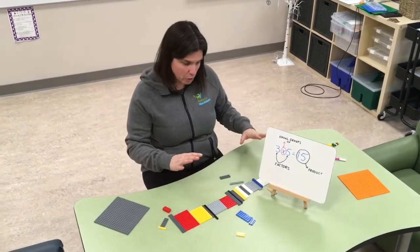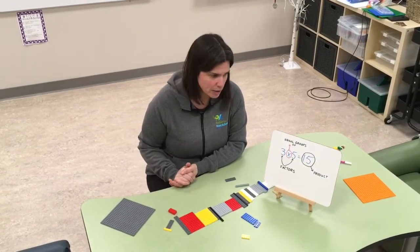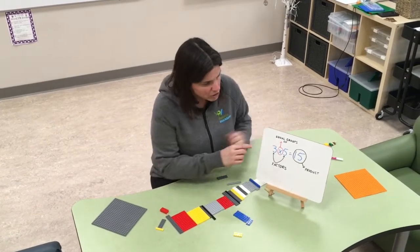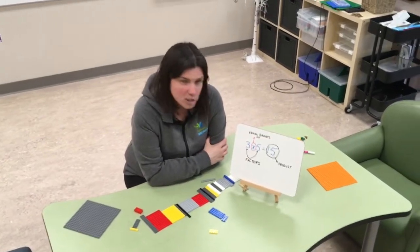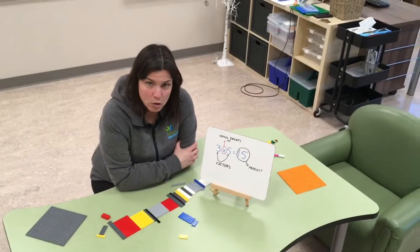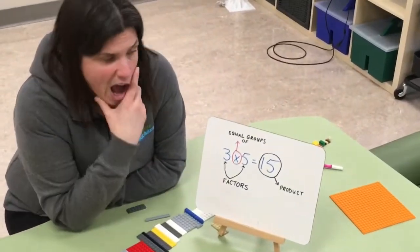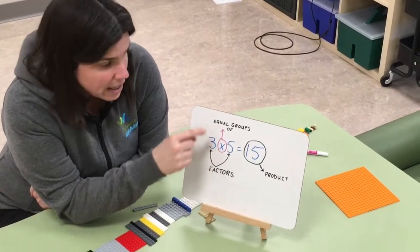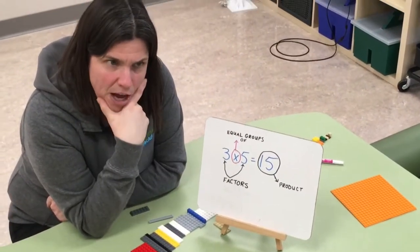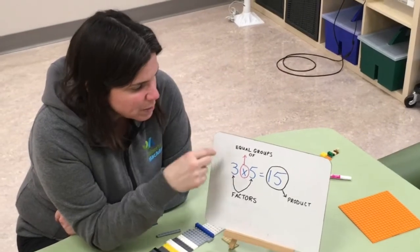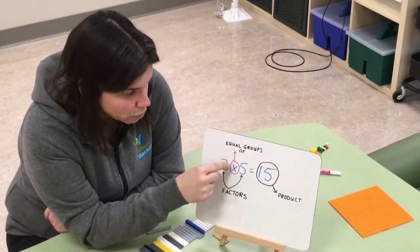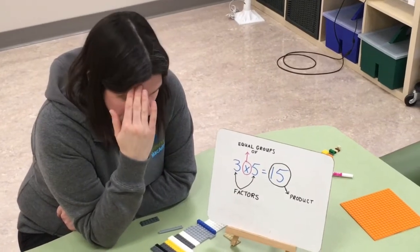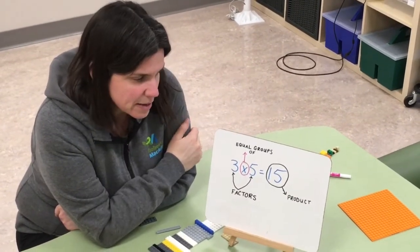Just before I jump into the LEGO exploration activity we'll be doing, I want to do a quick review for all our friends watching. We just want to remind you that multiplication is all about equal groups of. In fact, I always teach my students that the times sign actually means equal groups of. So when you think of three times five, you're thinking of three equal groups of five, and then you can either draw it out or think of it mentally and figure out that the answer is 15.